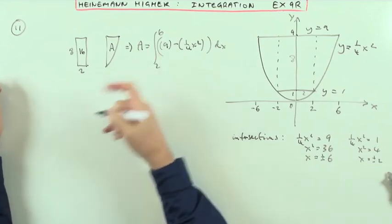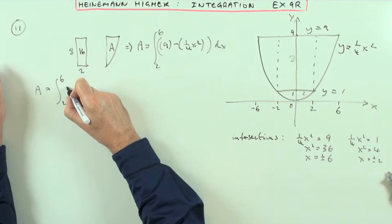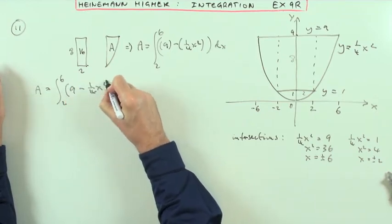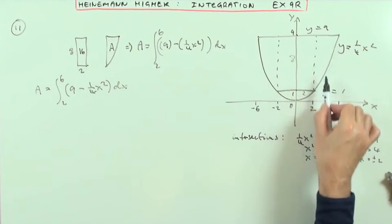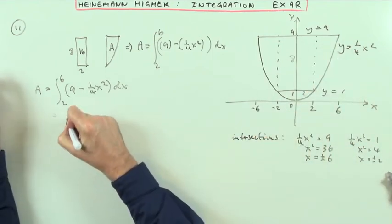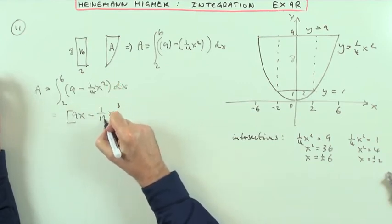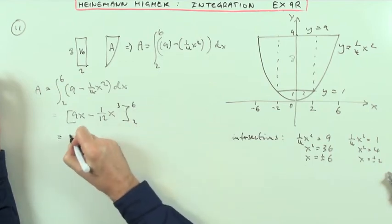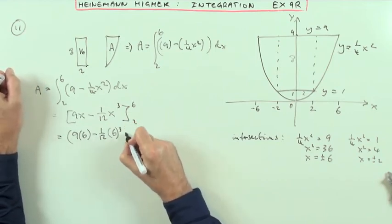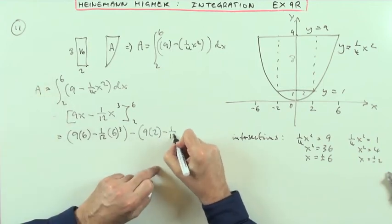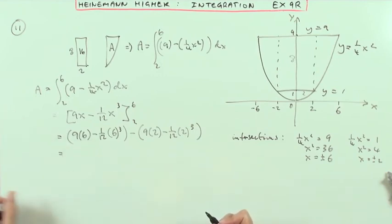So I'll work out that side area first. That area is the integral from 2 to 6 of (9 minus a quarter x squared) dx — the top curve take away the bottom curve, giving positive area elements. Integrating: the constant term 9 gives 9x, and the quarter x squared integrates to x cubed over 12. Evaluate at 6 and at 2: it's 9 times 6 minus a twelfth of 6 cubed, minus the bracket 9 times 2 minus a twelfth of 2 cubed.